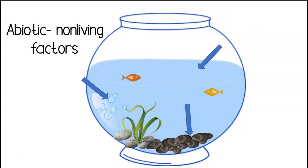Abiotic factors are the non-living components of an ecosystem. In the fishbowl this includes the water and its temperature, the rocks, and the amount of oxygen.